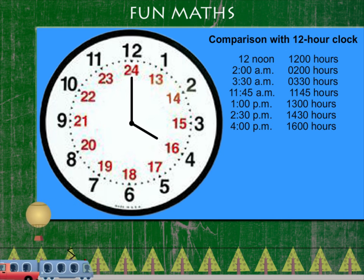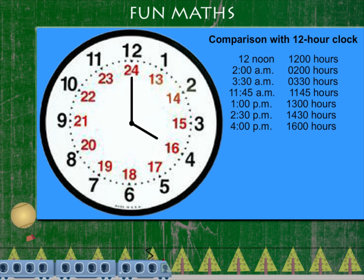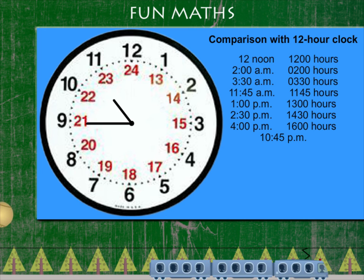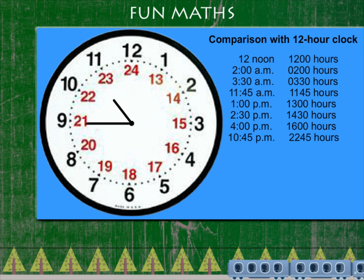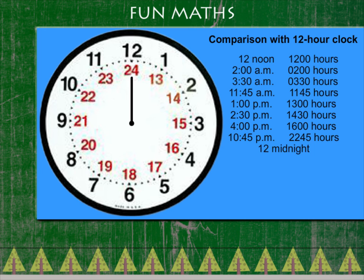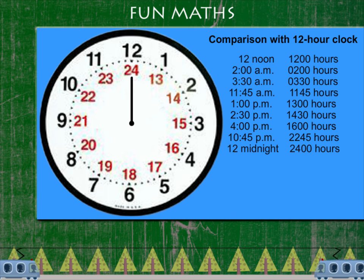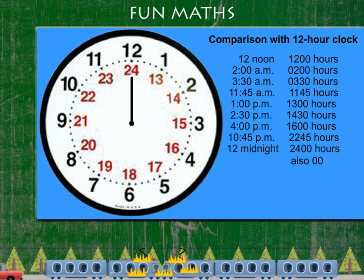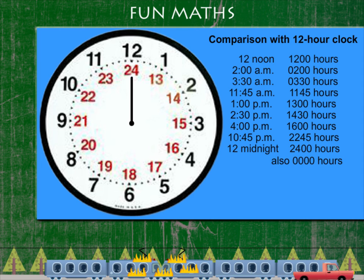4 p.m. is 1600 hours. 10:45 p.m. is 2245 hours. And 12 midnight is 2400 hours, also written as 0000 hours. That was fun!